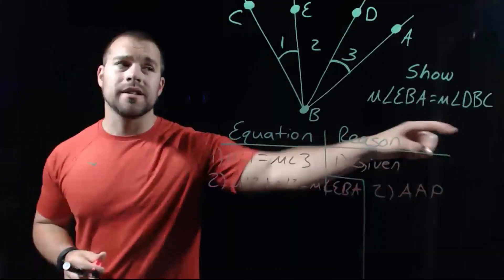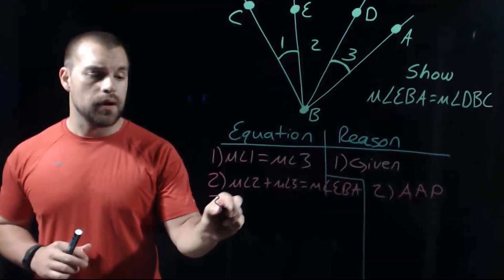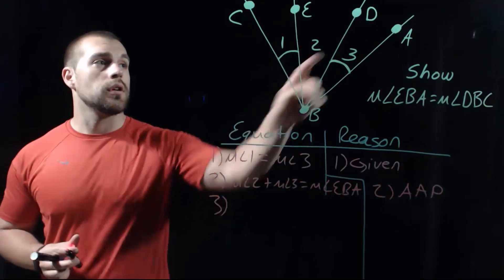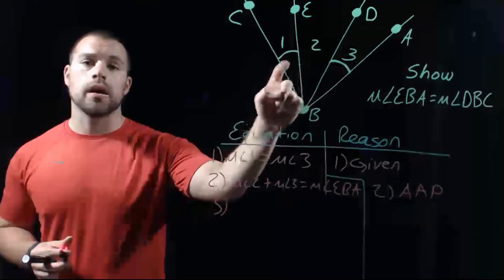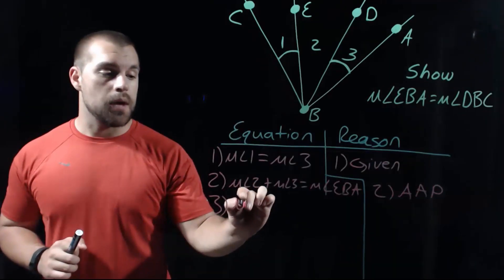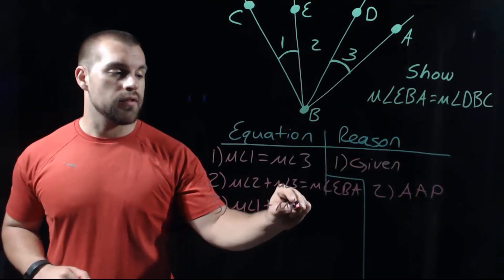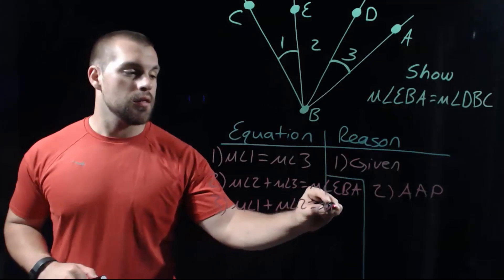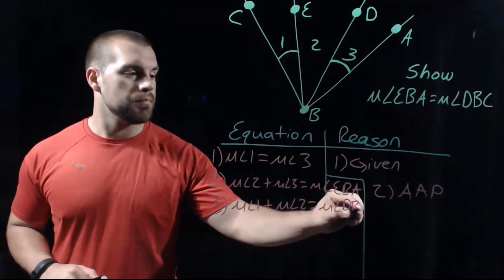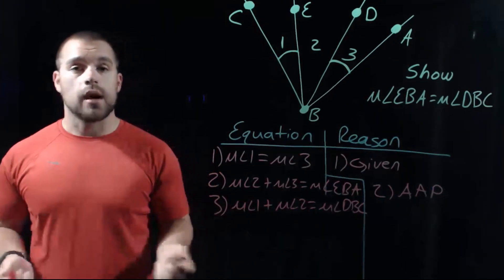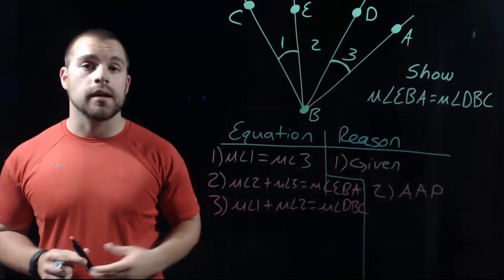We do the same thing with angle DBC. Looking at the two small pieces that make up angle DBC, it's made up of angle 1 and angle 2. So we say the measure of angle 1 plus the measure of angle 2 equals the measure of angle DBC. And again, that's our angle addition postulate — adding two small angles together to get a bigger angle.